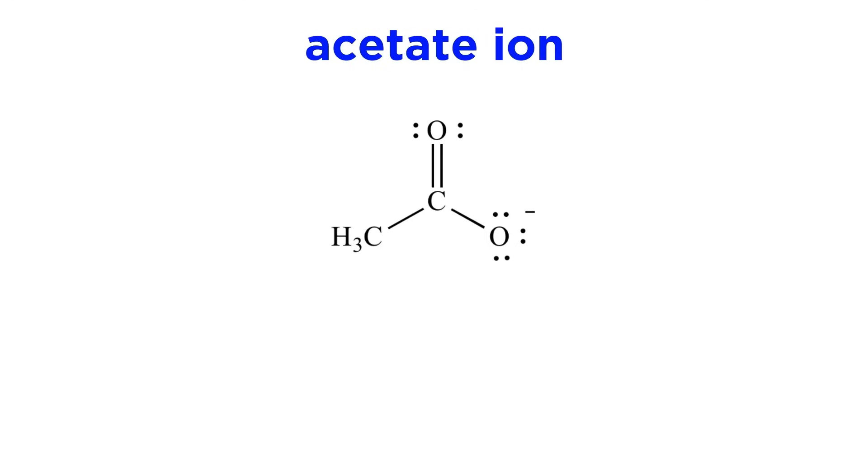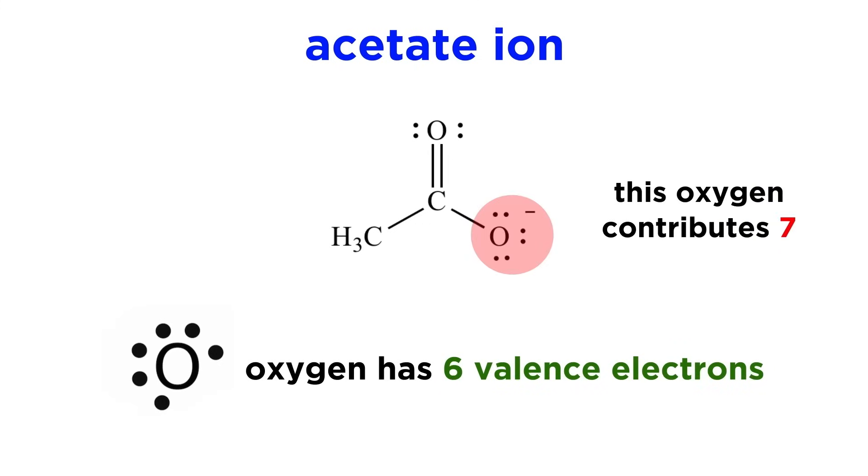Take this structure, which we call the acetate ion. We can see that one of the oxygens bears a formal negative charge. Let's quickly review why this is the case. Oxygen atoms have 6 valence electrons. However, in this Lewis dot structure, this oxygen atom is contributing 7 electrons, one of the electrons in this covalent bond and then 3 lone pairs.